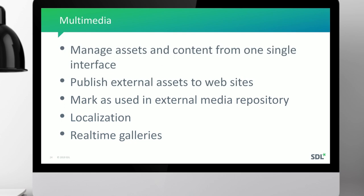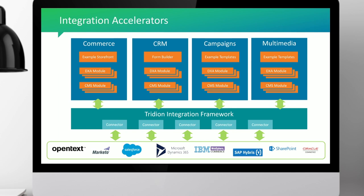For multimedia, you can manage asset content from a single interface, publish assets to a website, mark an asset used in external media repositories like a DAM so the DAM system knows the asset is in use and can't be removed, and handle different localization scenarios. You could also do real-time galleries using the GraphQL service to query images matching a certain category or tag. For these scenarios, we plan to build a number of integration accelerators with out-of-box modules and example modules — for example, an example storefront for commerce and some example templates.